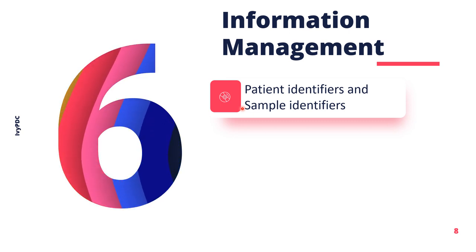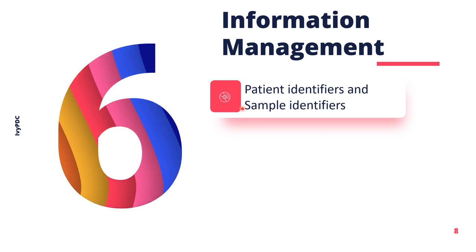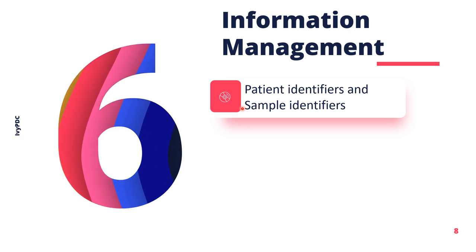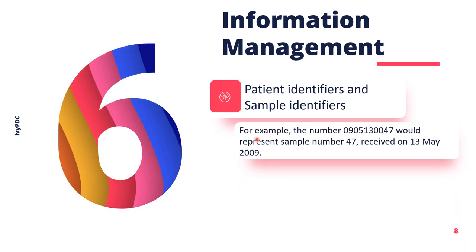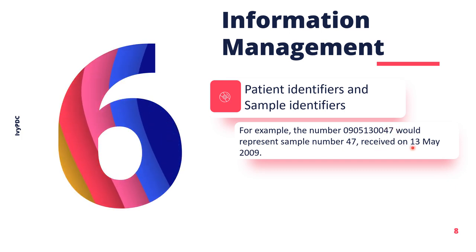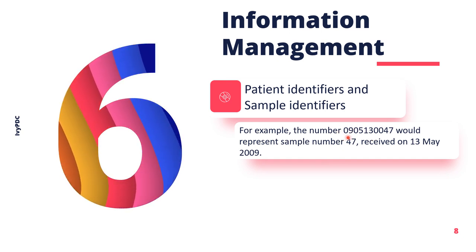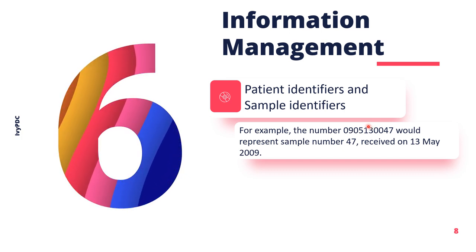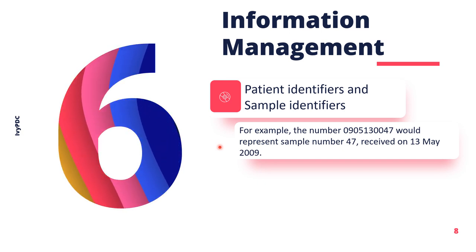The method for generating and assigning unique identifiers may depend on many factors. Some laboratories use commercially available computer systems that generate their own identifiers, while paper-based systems need to establish their own. An example of a sample identifier is 0905130047, representing the 47th sample received on May 13, 2009. Every laboratory has the liberty to create their own unique sample identifiers.